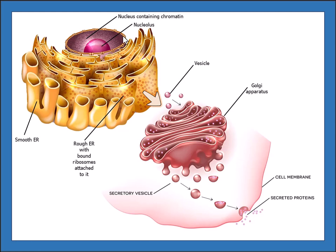Here's the nucleus with the nucleolus, nuclear pores, and membrane. You can see the ER extending right out of the nuclear membrane — this is the smooth ER without ribosomes and this is the rough ER with bound ribosomes. The ER ships proteins in little bubble-like structures called vesicles to the Golgi apparatus, which will modify those proteins further.